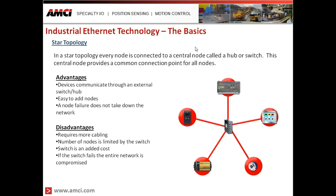The advantages of that type of network are that the devices communicate through that switch or hub. The PLC would send messages to all of the peripheral devices and, if need be, can also receive messages from those peripheral devices. It's easy to add a node — if my switch has any open ports, I simply plug an Ethernet connector from the additional device into my switch and can now communicate through the switch to that device. And if a node fails — for example, one of the sensors or a cable — the rest of the network stays up and running, so it can be a very robust network.